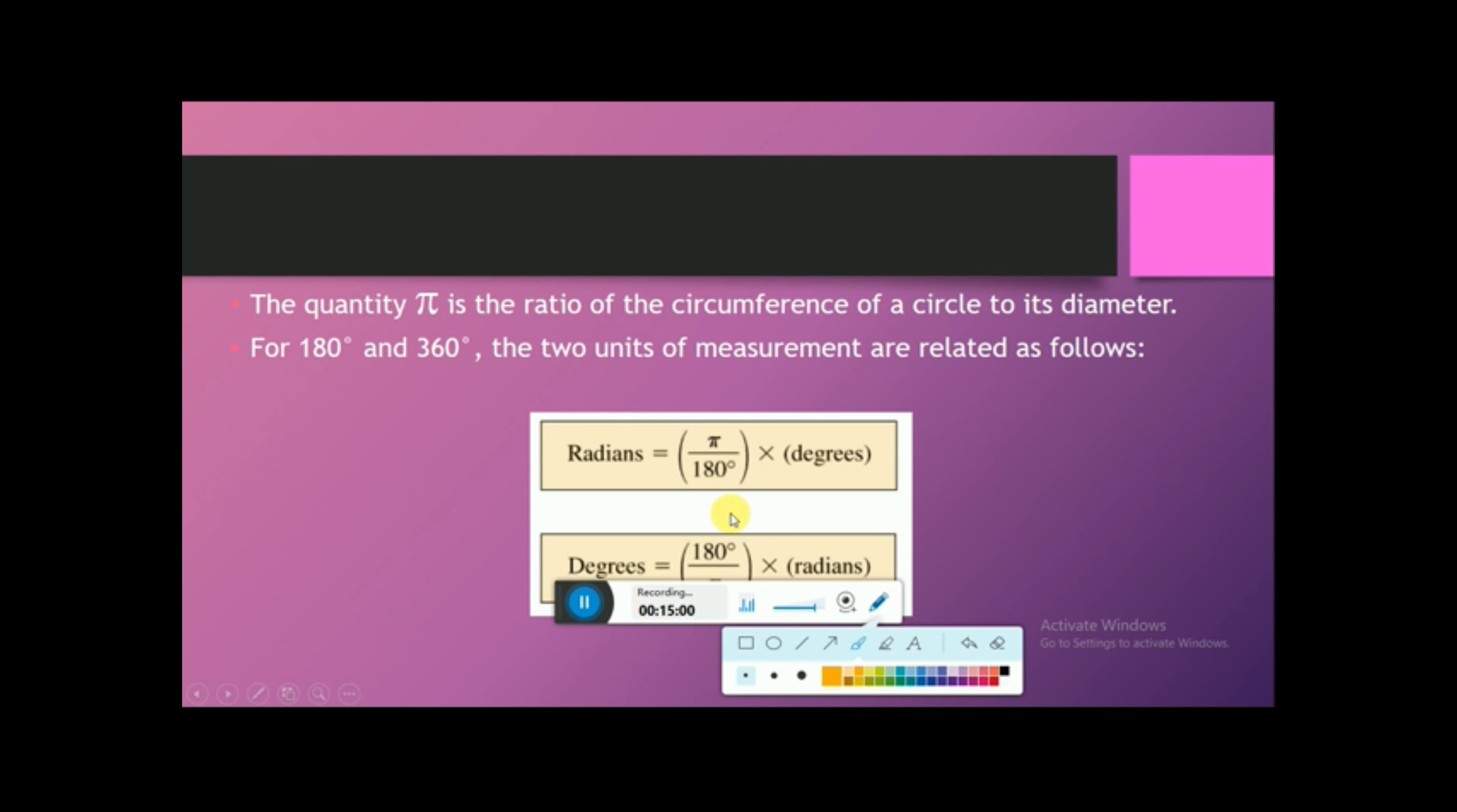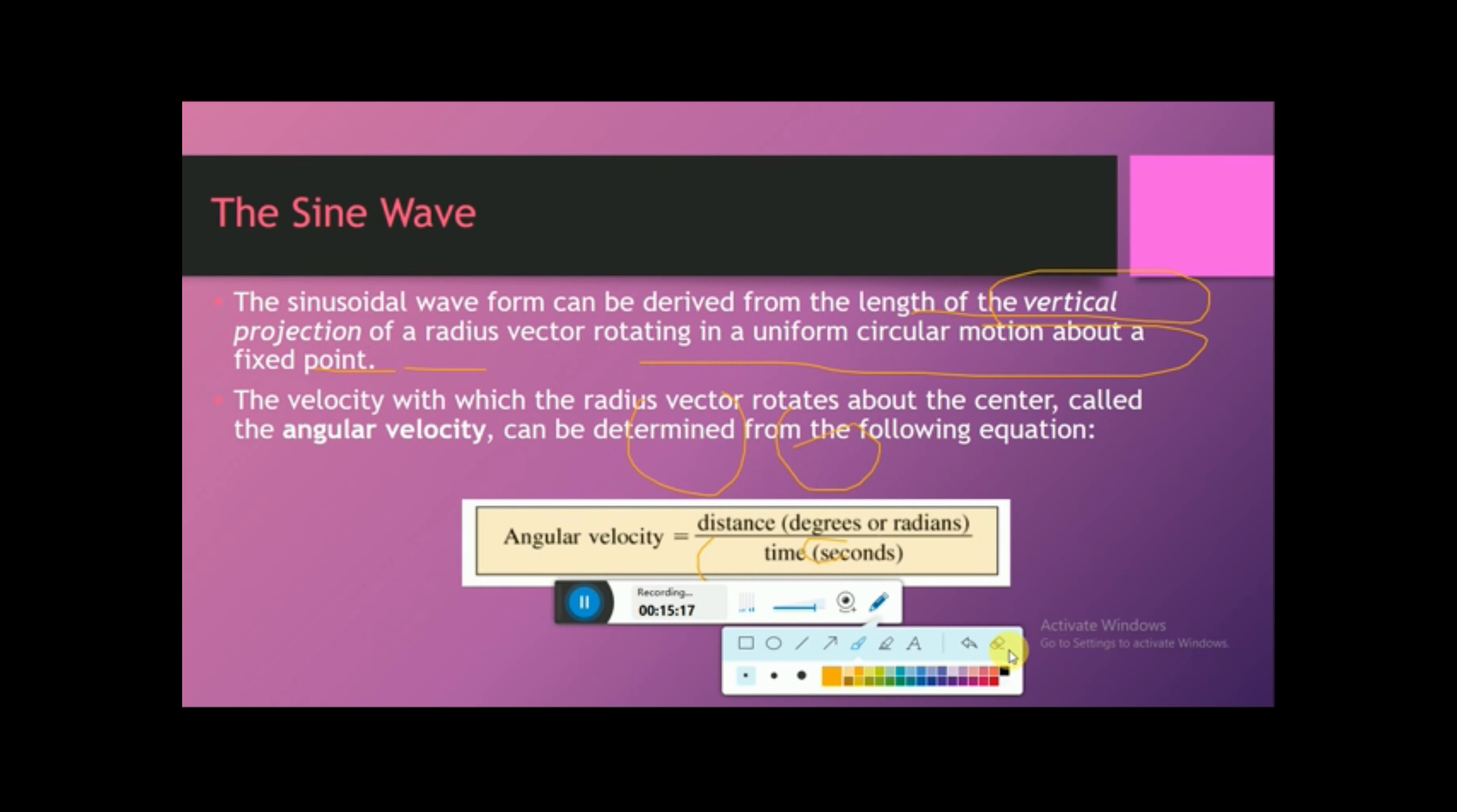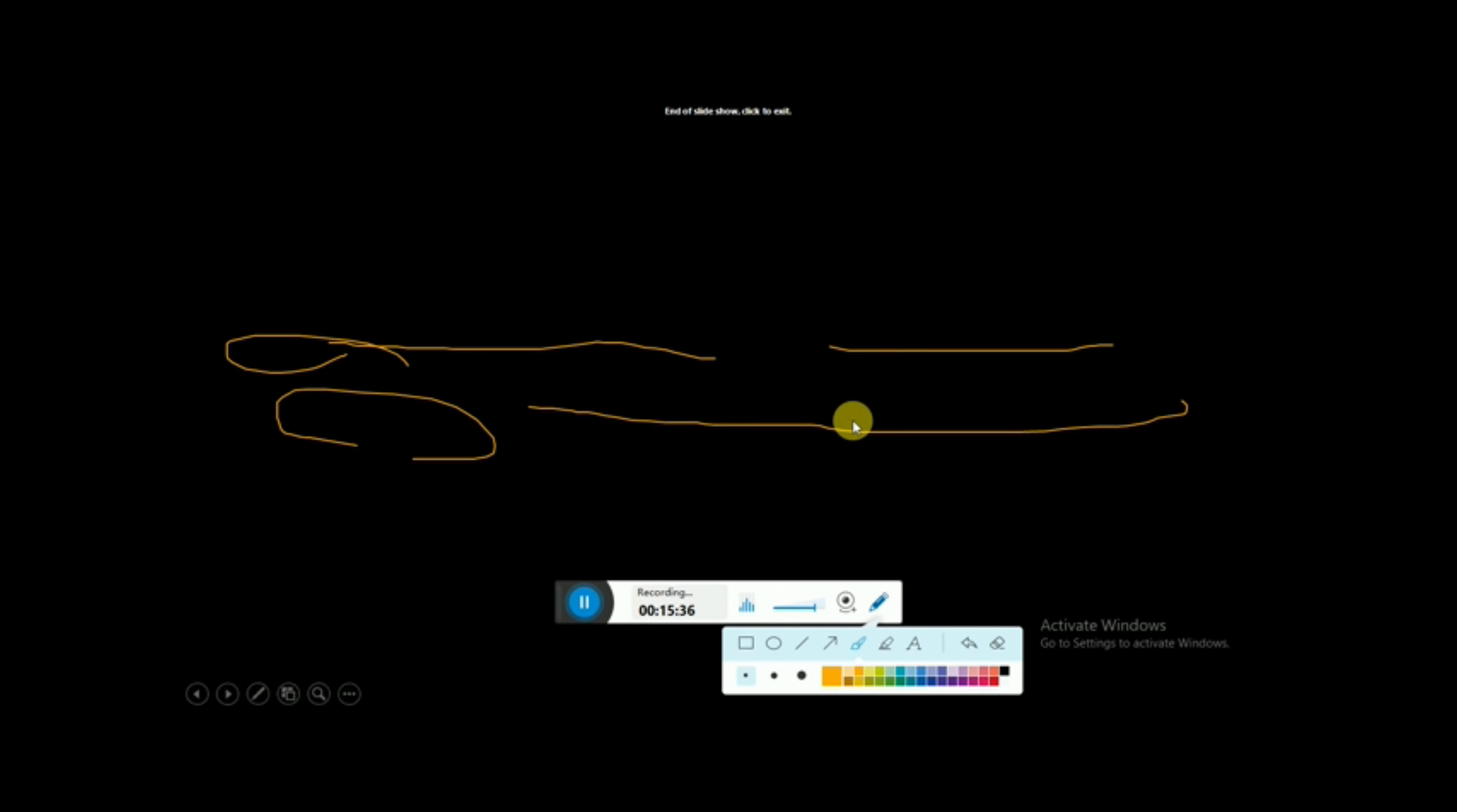The quantity pi is the ratio of the circumference of a circle to its diameter. The two units of measurement are related as follows: radians equal pi by 180 times degrees, and degrees equal 180 by pi times radians. The sine wave or sinusoidal wave can be derived from the length of the vertical projection of a radius vector rotating in uniform circular motion about a fixed point. The velocity with which the radius vector rotates about the center is called angular velocity.